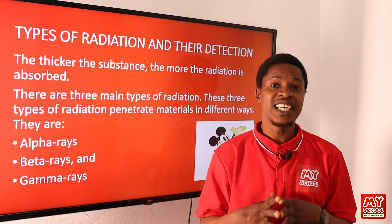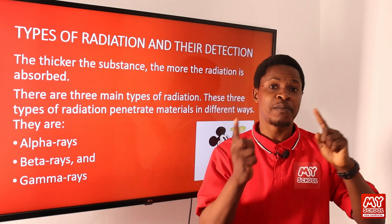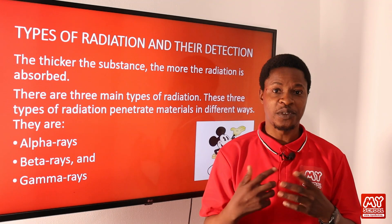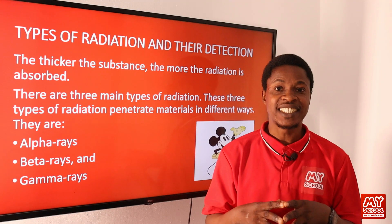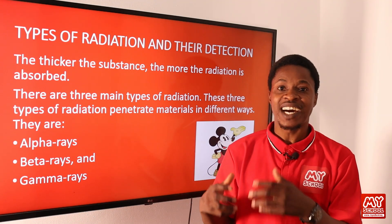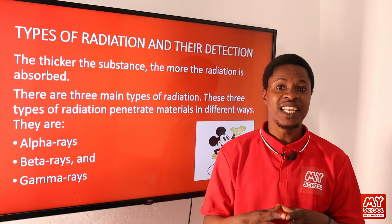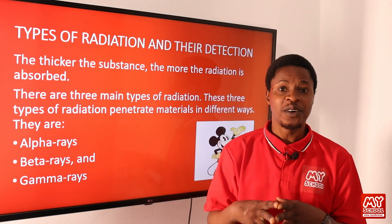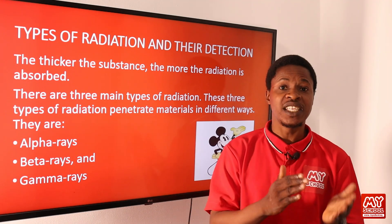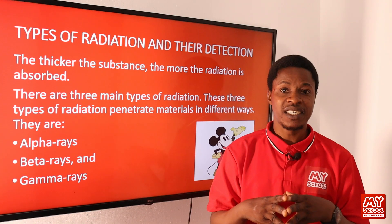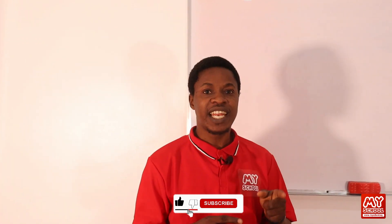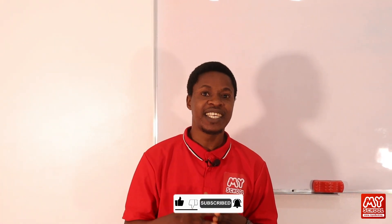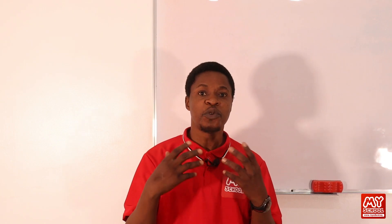If you want access to the full video, please click the link in the description to visit the My School website and subscribe. In the full video, we cover the characteristics of the types of radiation, half-life calculations, and the differences between nuclear and chemical reactions. If you enjoyed this content, please like, subscribe, and tap the notification bell.